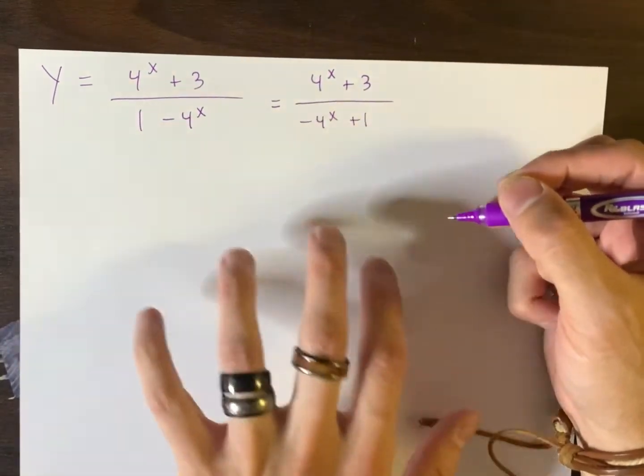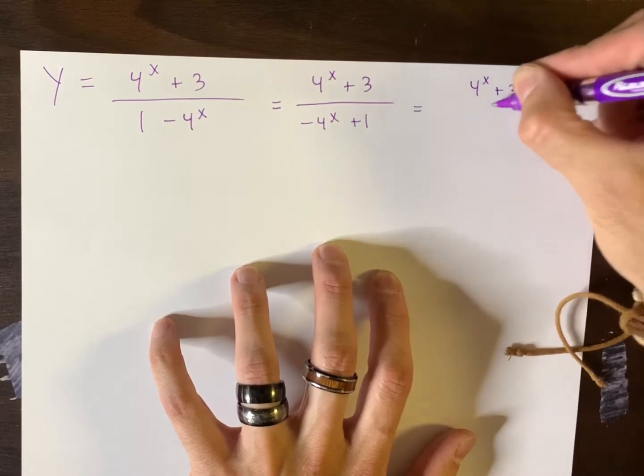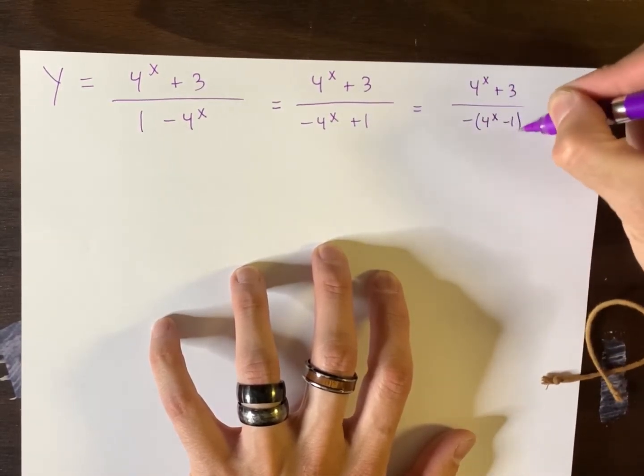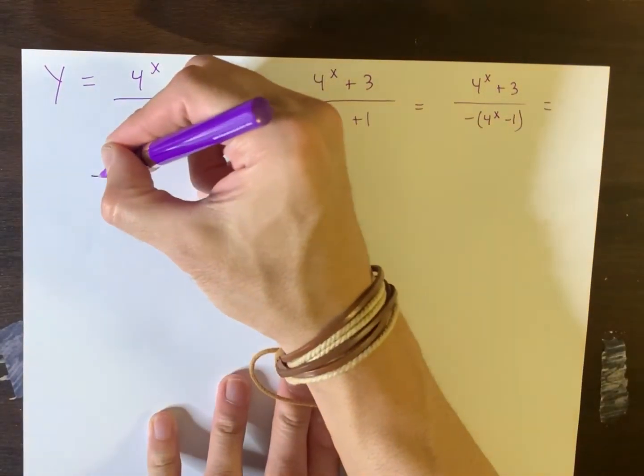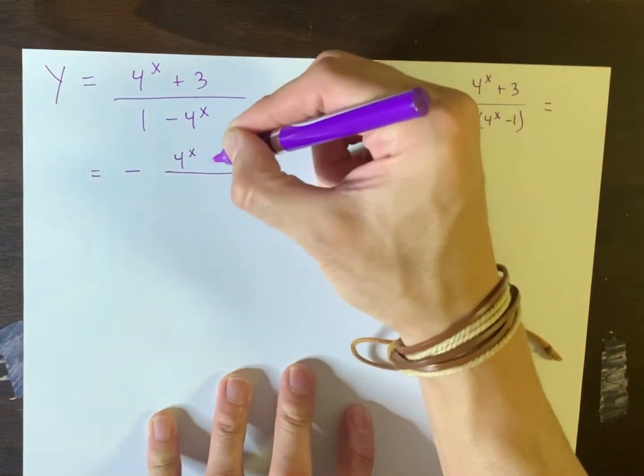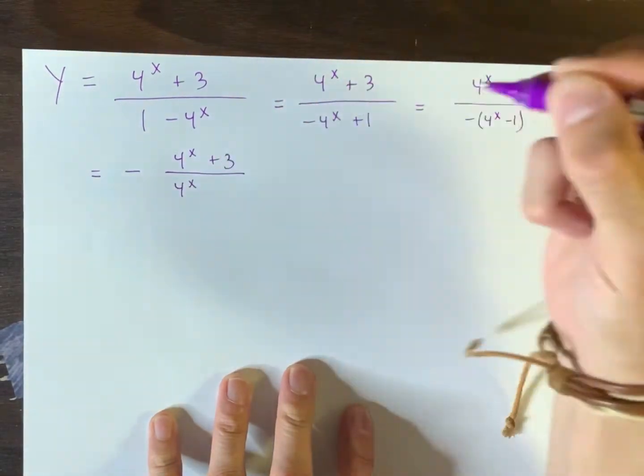So I'll reverse the order of the terms in the denominator. And then what I can do is I can factor out a negative from the terms in the denominator. And furthermore, I can kick out the negative to the front. So I essentially have the following: a negative ratio where that's the numerator and this is the denominator.